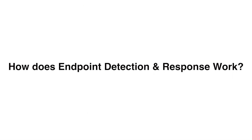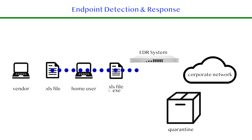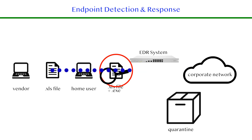How does endpoint detection and response work? One of the critical advantages of EDR is its ability to scan emails at the attachment level. So let's say it's an Excel file, a PowerPoint, a PDF — whatever it might happen to be — the EDR system is going to take a critical look at that file itself.